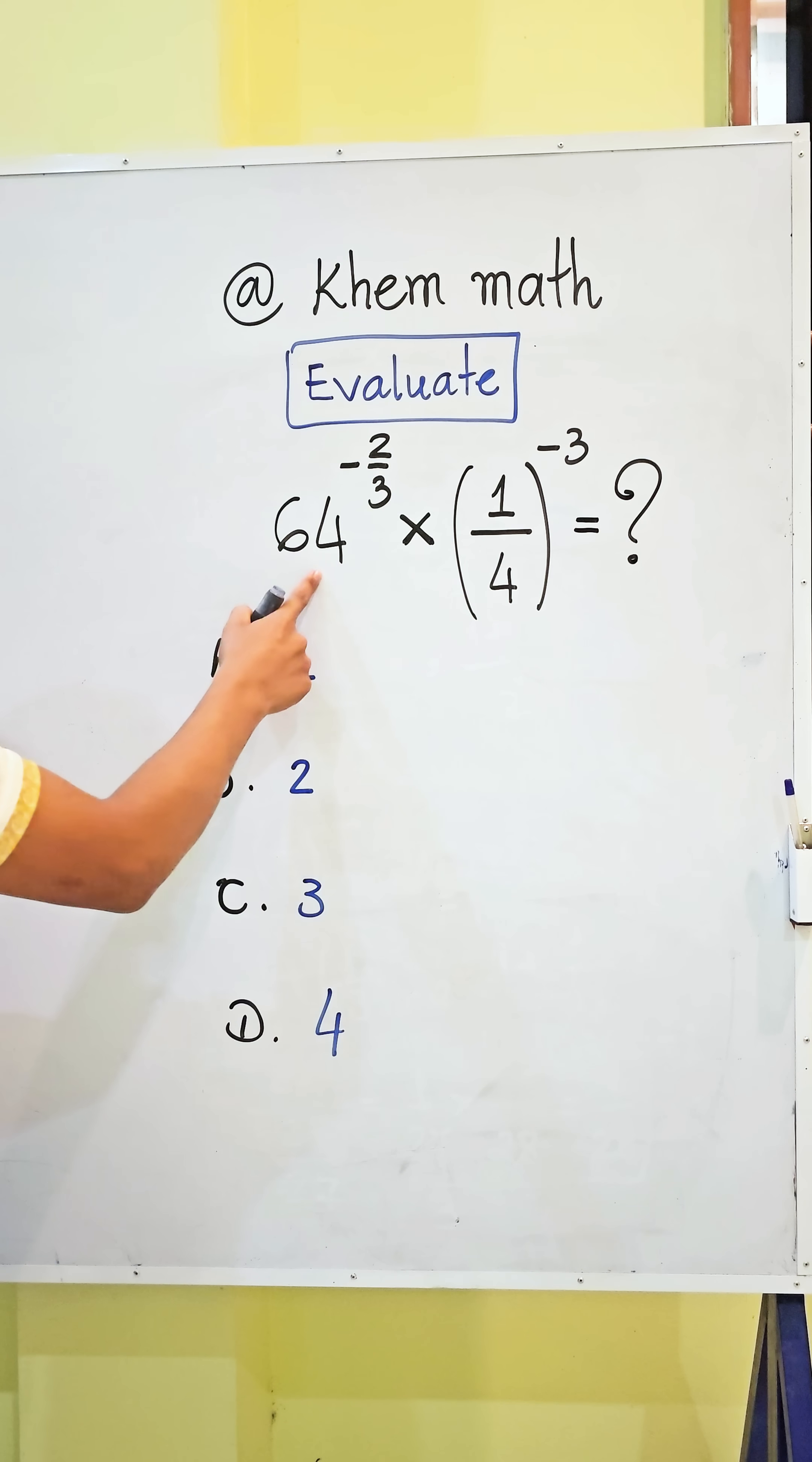Evaluate 64 power negative 2 divided by 3 times 1 divided by 4 all power negative 3. The answer choices are A equal to 1, B equal to 2, C equal to 3, and D equal to 4.